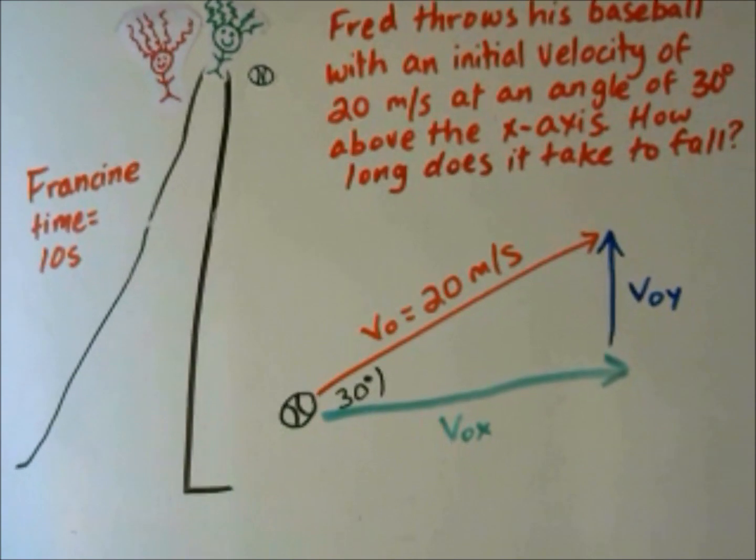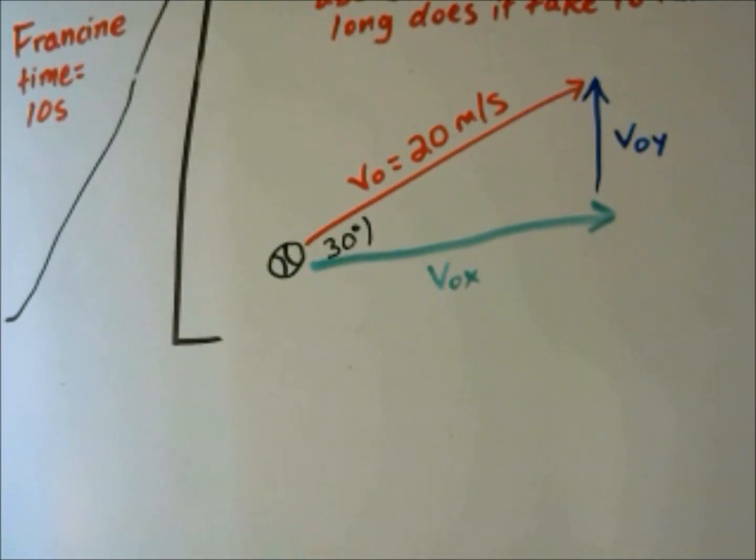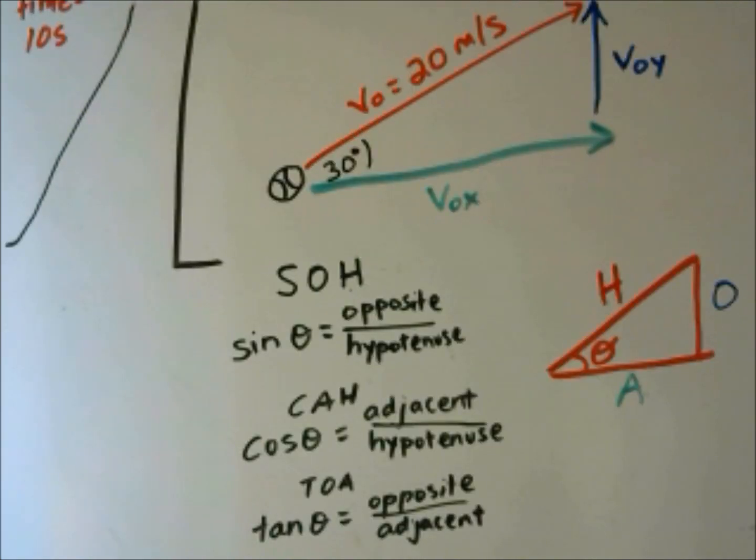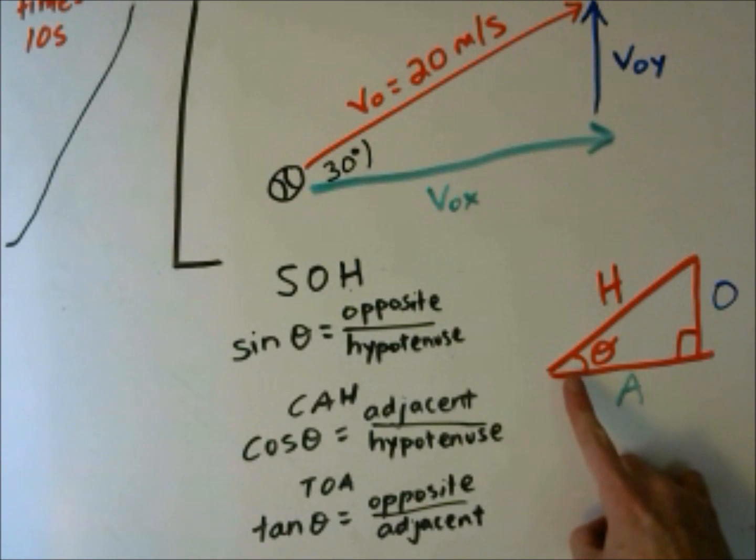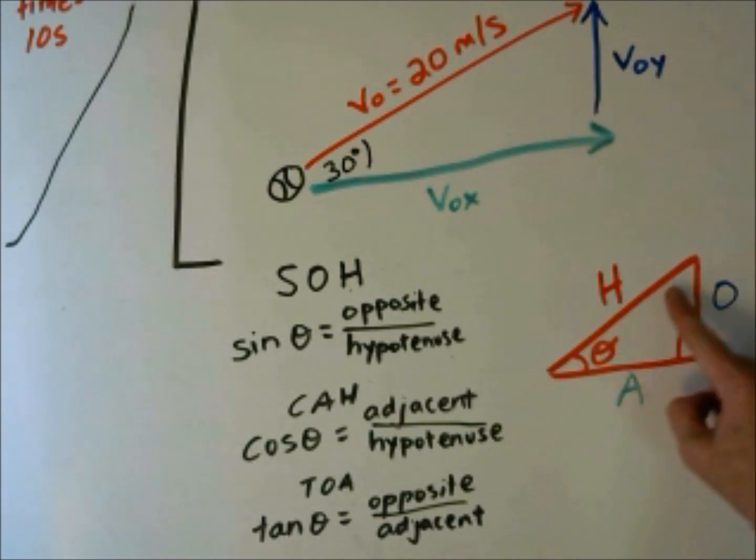We're going to use our sine, cosine, and tangent functions. So as a review of trigonometry, if we have a triangle with a 90-degree angle and we have an angle called theta, the leg of the triangle opposite it is called the opposite leg. The leg adjacent, that means right next to it but not the hypotenuse, is the adjacent leg. And then the longest leg of the angle, the part that's opposite the 90 degrees, is our hypotenuse.